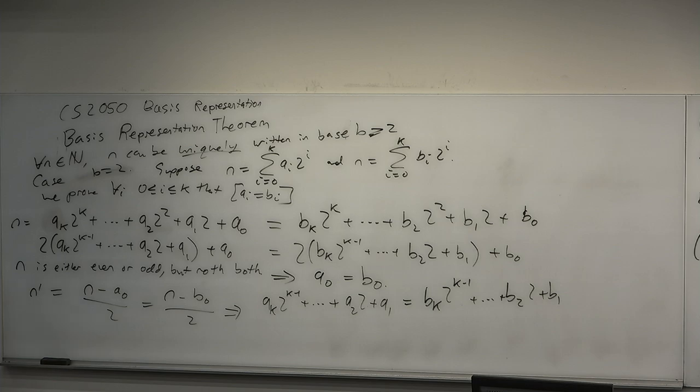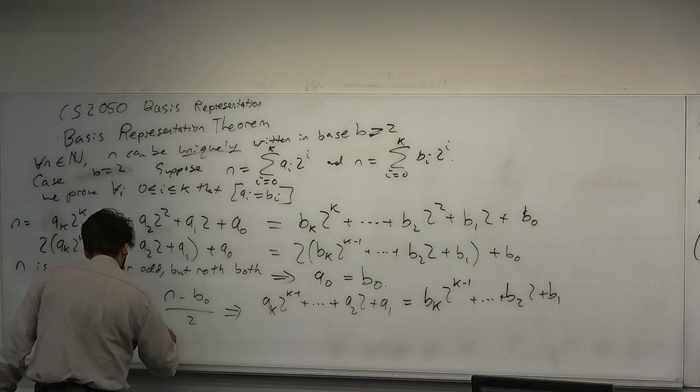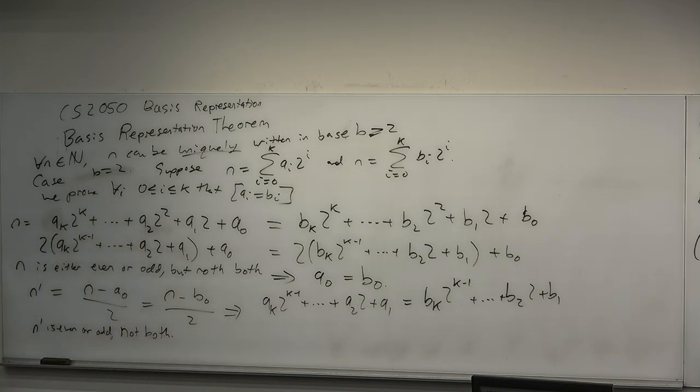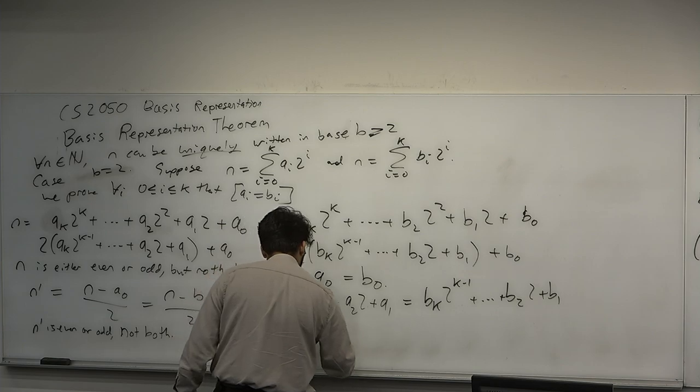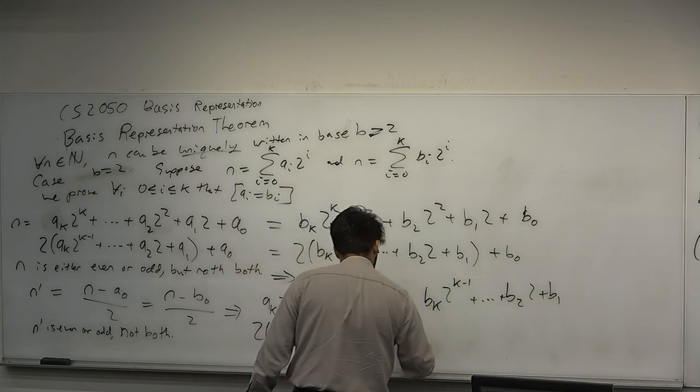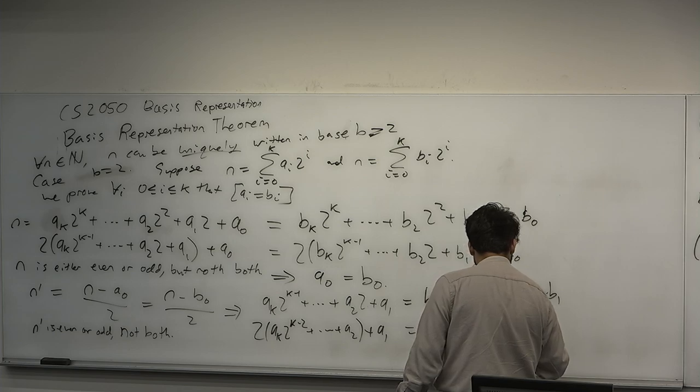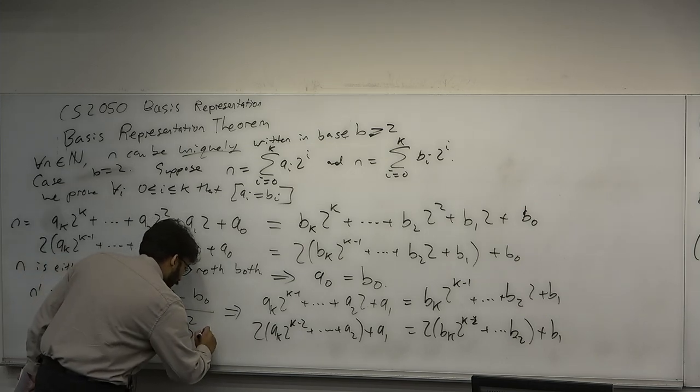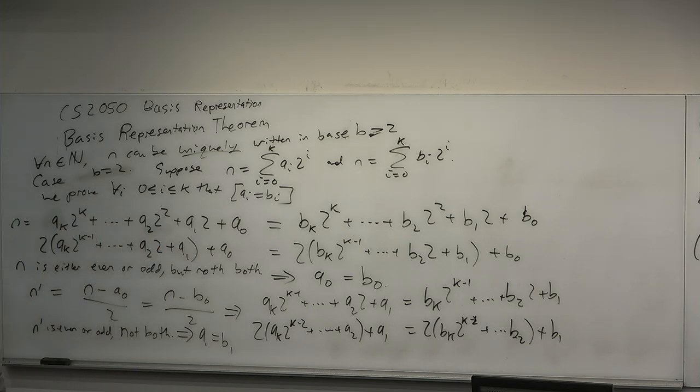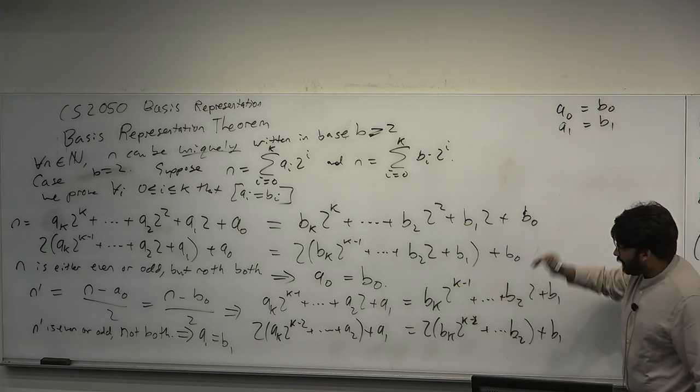Now, n prime, you know, is a number, right? Every number is either even or odd, but not both. If n prime is either even or odd, or not both, that implies that a_1 is equal to b_1. Right? So we know that a_0 is equal to b_0, a_1 is equal to b_1. But we can just repeat the argument again. Repeat.